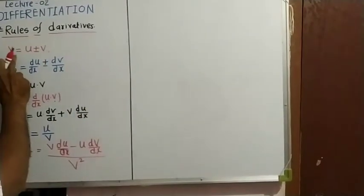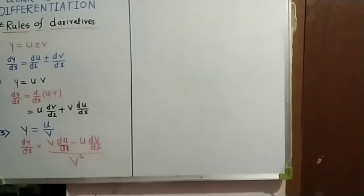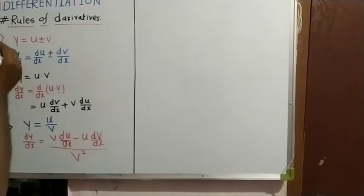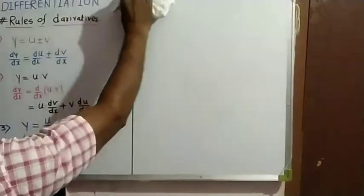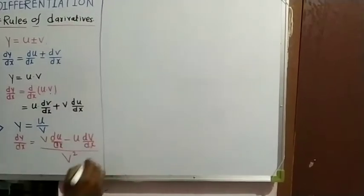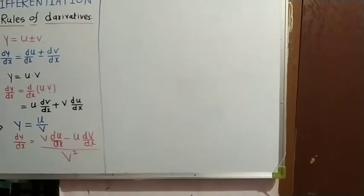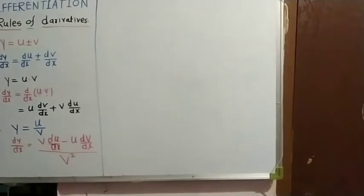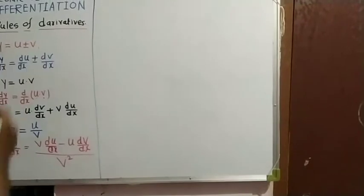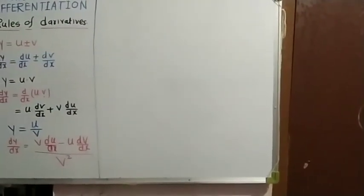Now, if y is a function of two variables — suppose y is equal to f of x — and we differentiate it, then x and y are two functions and we find their differentiation.